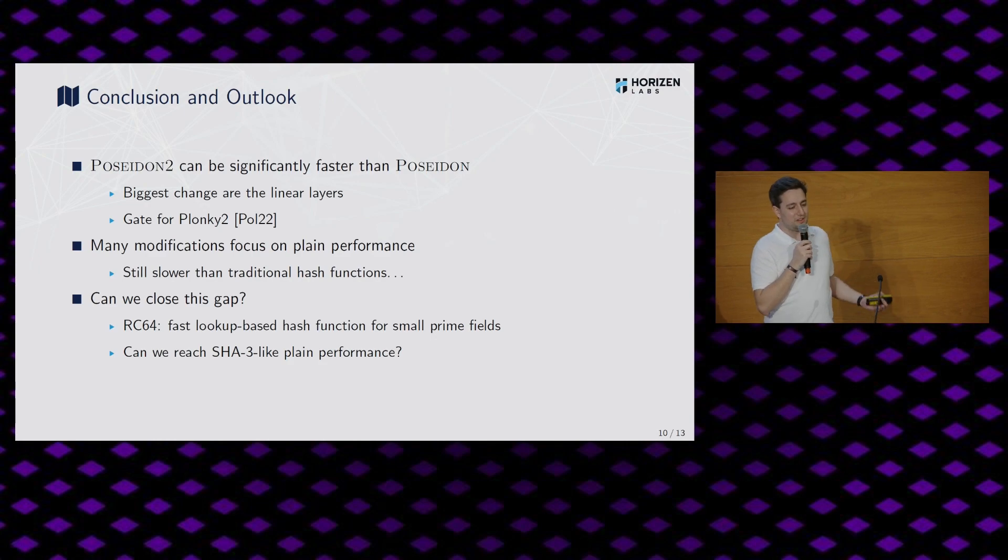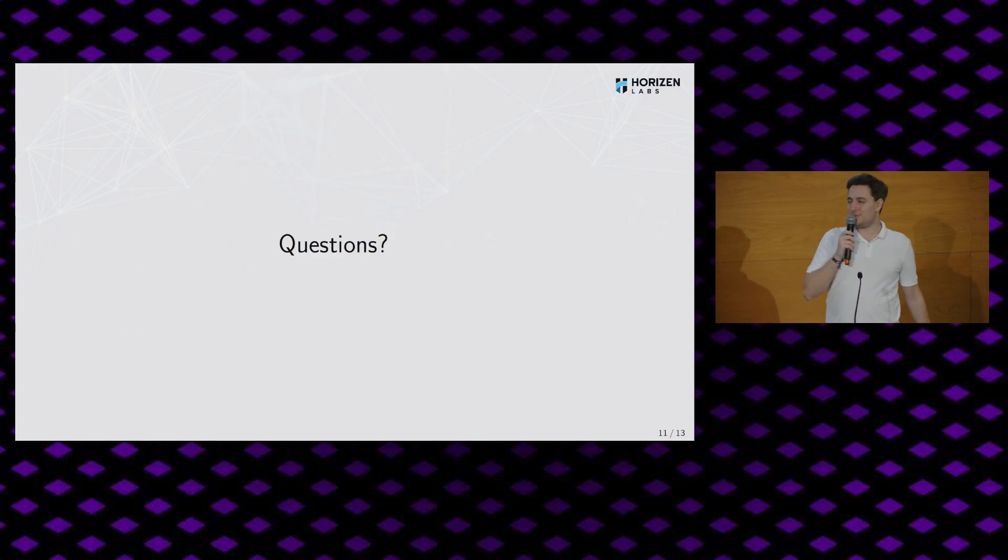So the question is, of course, can we close this gap? Can we find some hash function which is both circuit friendly, but also very, very fast? And currently we're working on a successor to reinforced concrete, which also works with smaller primes. So this is called RC64, but we're also aiming for 32, 31-bit primes. And we're trying to close this gap. And, yeah, well, I want to close this presentation also with a question, maybe, can we even reach SHA3-like plain performance? And maybe in the future, maybe even SHA2. Let's see. Thank you very much.